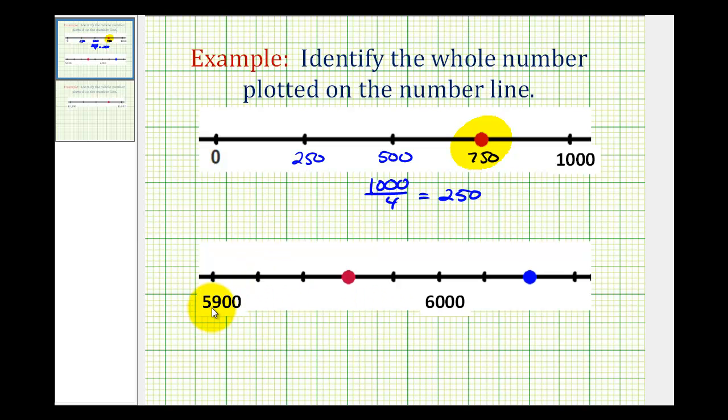this is marked from 5,900 to 6,000, which would be 100. And this interval is divided into 1, 2, 3, 4, 5 equal parts. Well, 100 divided by 5 is equal to 20, so each tick mark represents 20.